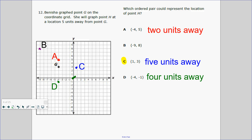Venetia graphed point G on the coordinate grid. She will graph point H at a location five units away from point G. I graphed several points in different colors. We have to figure out which one is five units away. Starting at the origin, I go one over to the right. Three means above. Is this five units away? Let's count — one, two, three, four — yes, C is five units away. This other point is only two units away, and another is four units away.